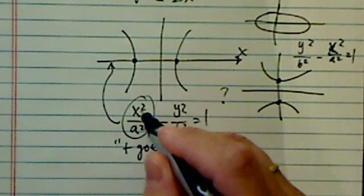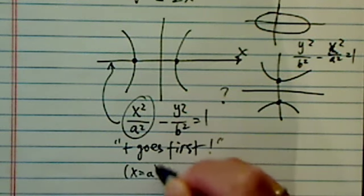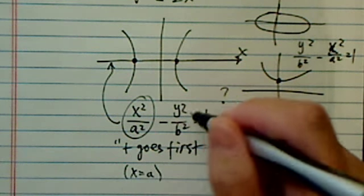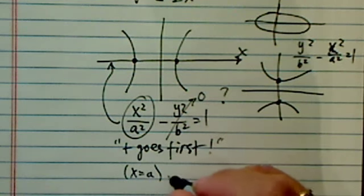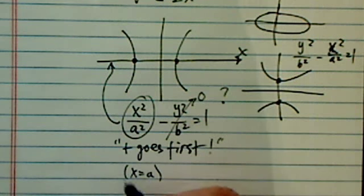this term here, as you can see, when x equal to a, then y is equal to 0 because it's on the x-axis. This part goes to 0. So we were given the vertices is at (4,0), negative (4,0). So from there,